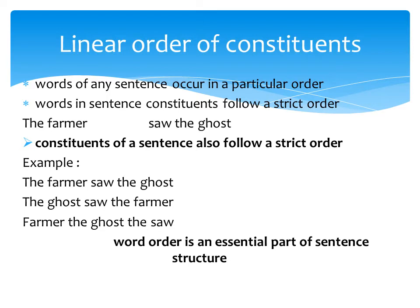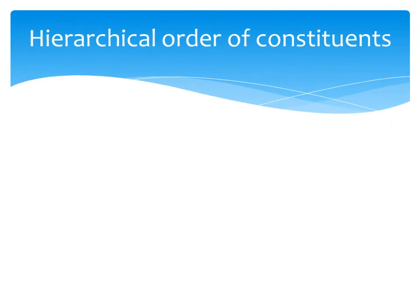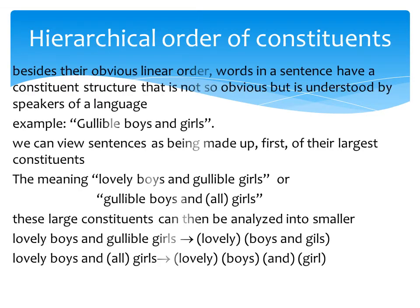Number one, linear order of constituents: words of any sentence occur in a particular order, and in a sentence, constituents follow a strict order. For example, 'the farmer saw the ghost' — the constituents follow a strict order. You can have 'the farmer saw the ghost' or 'the ghost saw the farmer,' showing that word order is an essential part of sentence structure.